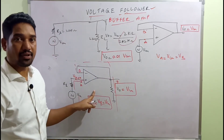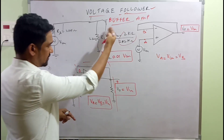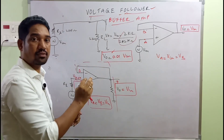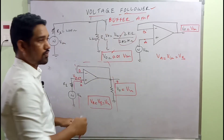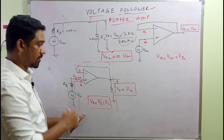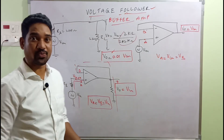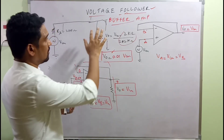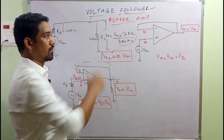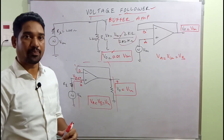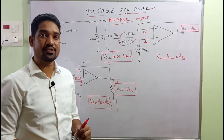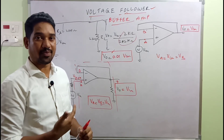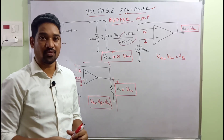This attenuation problem is known as the loading effect. We eliminate the loading effect by using a voltage follower, which is why this configuration is also known as a buffer amplifier. Many circuits ahead are linked to the voltage follower arrangement of an operational amplifier. Please make a note of this and support the channel with your subscription. Thank you for watching.